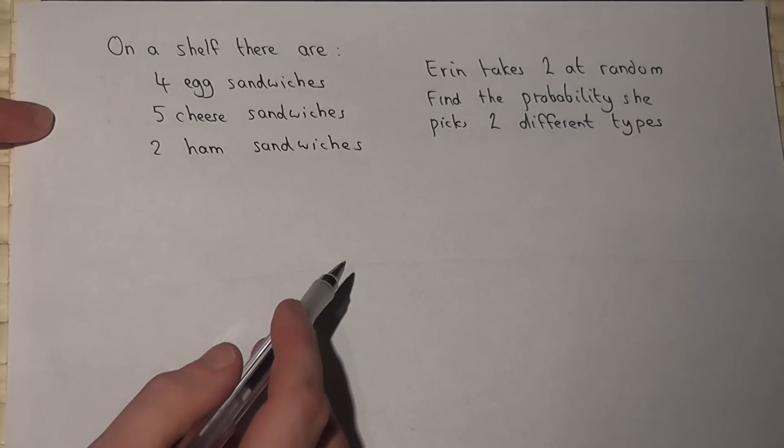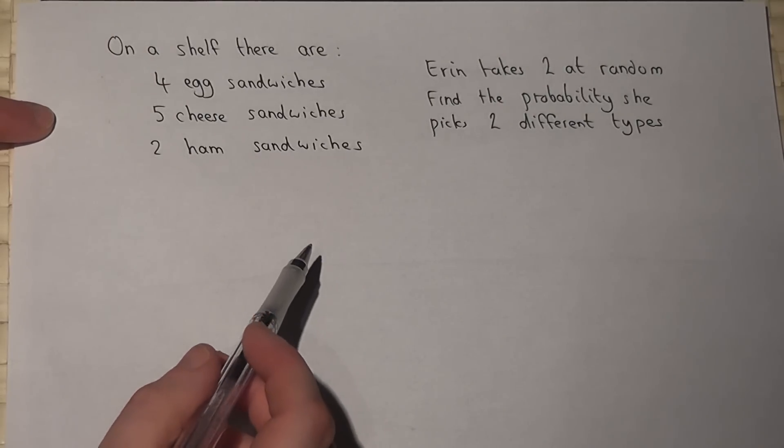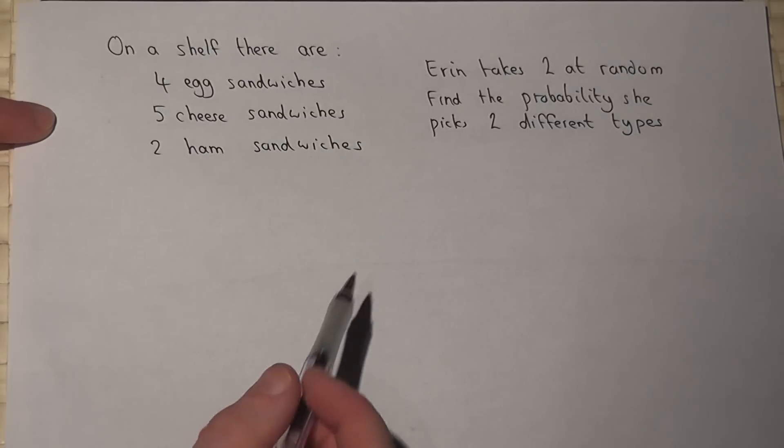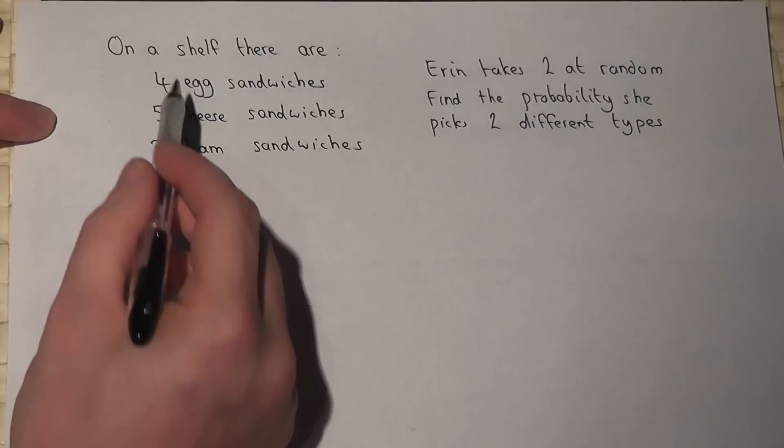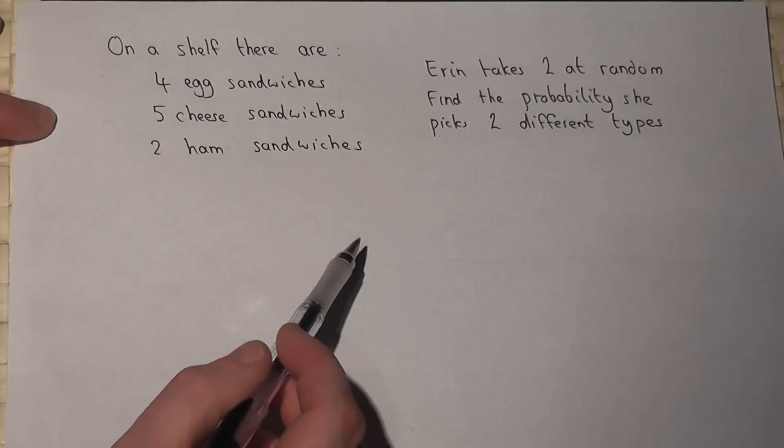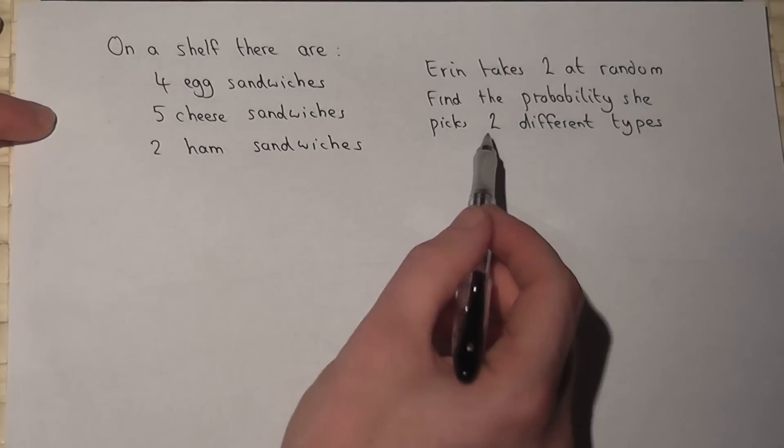This question will look at using a tree diagram to solve a certain type of question, though this can be solved in lots of different ways. In this situation, on a shelf there are four egg sandwiches, five cheese, and two ham. Erin takes two at random and we want to find the chance that she picks two different types.